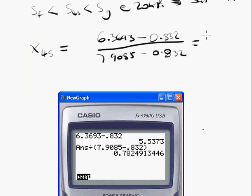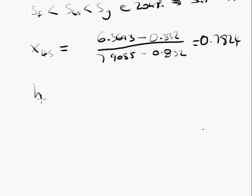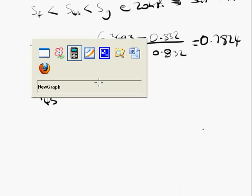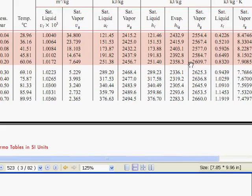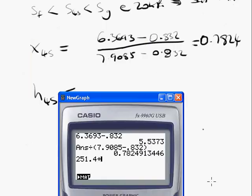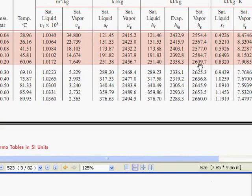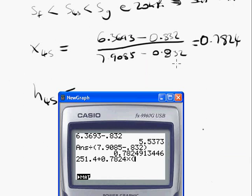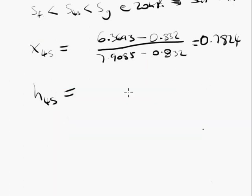So the enthalpy is, we now have quality and pressure in state 4s, that's two properties, so we can find the enthalpy. So the enthalpy is going to be 251.4 plus quality times the difference in enthalpy between liquid and vapour, which is 2358.3 minus 2096.5, giving us 2325.3 kilojoules per kilogram.